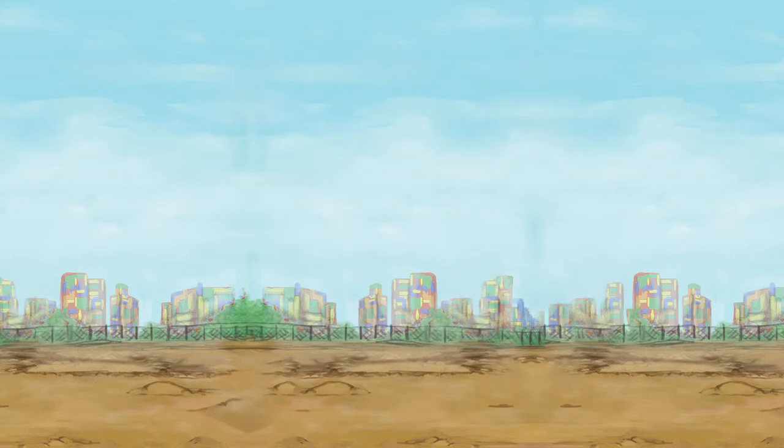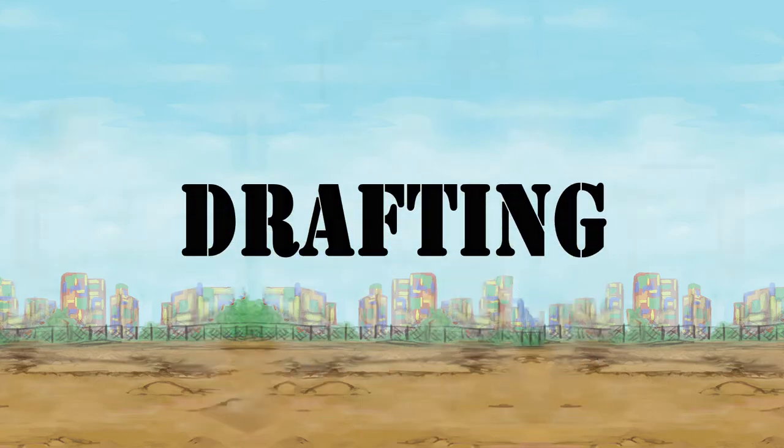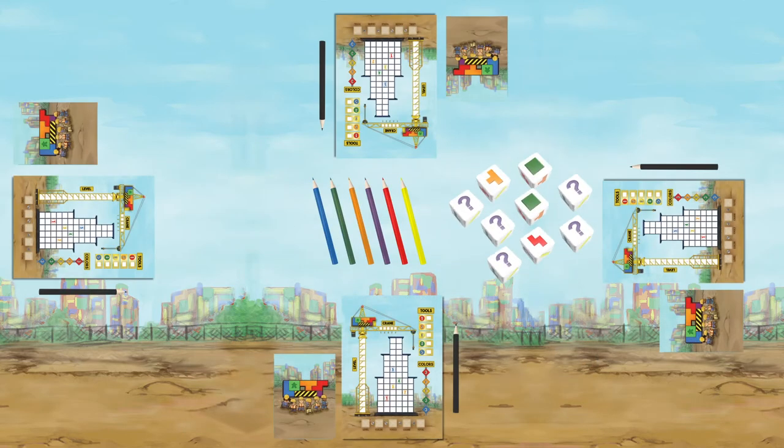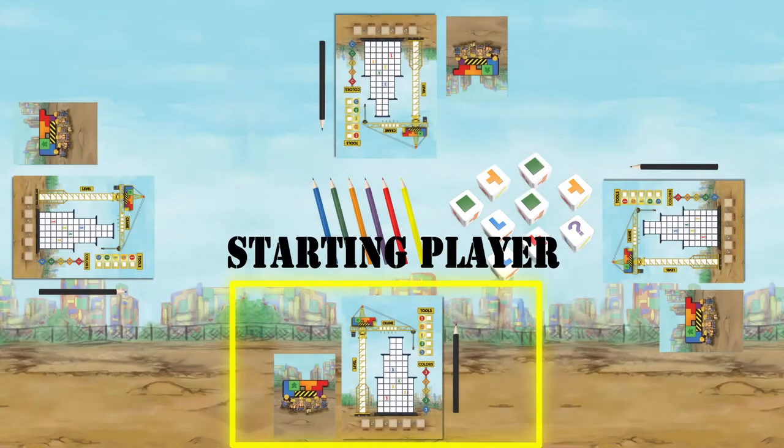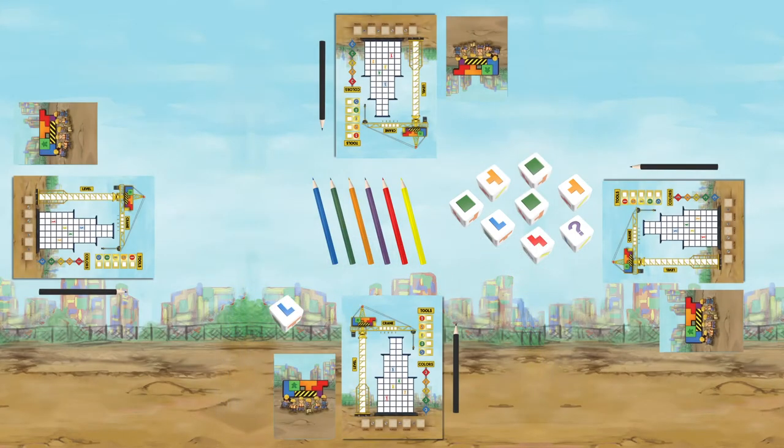In phase one, drafting, the starting player rolls all the dice. If more than half of the dice in any roll came up as question marks, then re-roll all the question marks. For the first draft, the starting player will now choose one die, then the next player in clockwise order will select a die, and so on until the last player has chosen one.